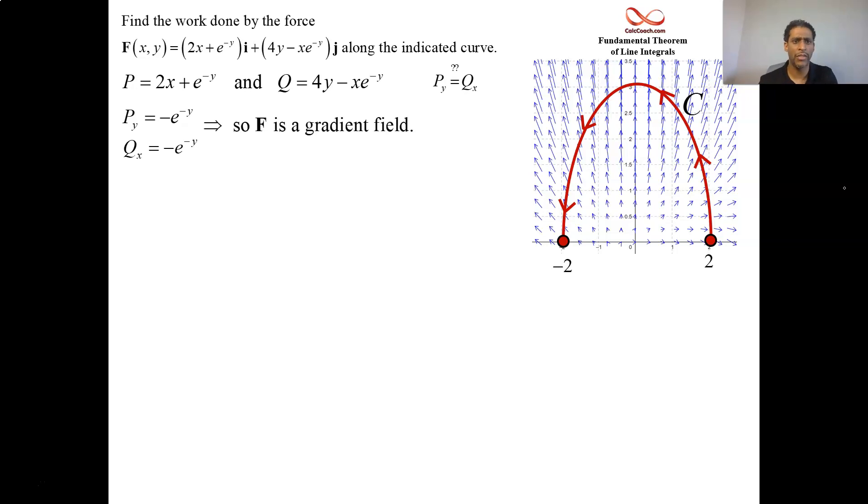F is the gradient field for some potential function φ. The way we can find φ is by integrating. Integrate p with respect to x. We'll get x squared plus x e to the minus y, plus maybe some function who has some y's in it. Integrate q with respect to y. We'll get 2y squared plus x e to the minus y, plus some function who could have an x in it.